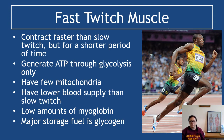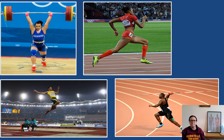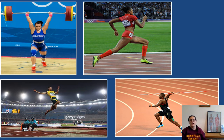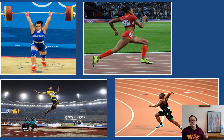Fast twitch muscle fibers tend to be found in larger numbers in people who do fast sports, such as sprinting, weightlifting, the long jump, and javelin throwing. These involve short sprinting distances or sudden powerful movements. Weightlifters, for example, only need to hold a weight above their head for a few seconds — those strong, fast muscle fibers contract intensely for a very short period of time before fatiguing.